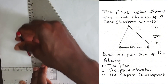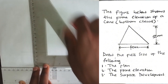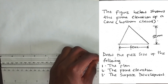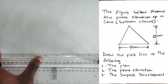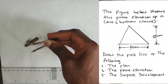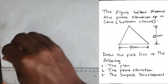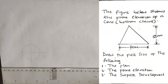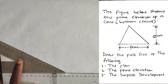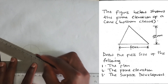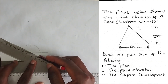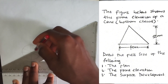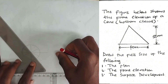Now I'm going to pick a 20 millimeter radius on my compass, place it at the center, and draw my circle, which will serve as the plan. Then we are going to divide this circle into 12 equal parts. I've done a video on that and I'll drop the link in the description.